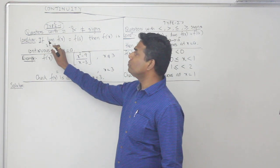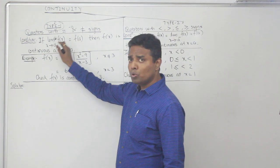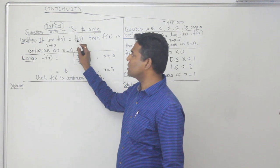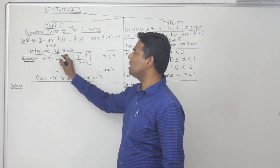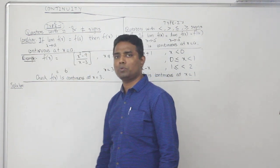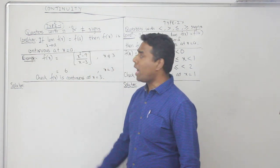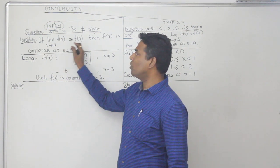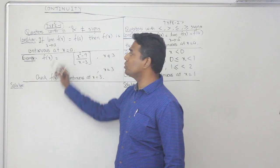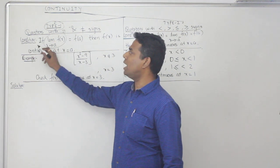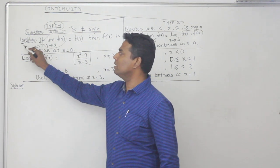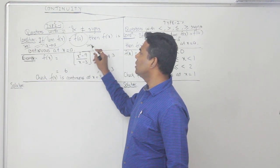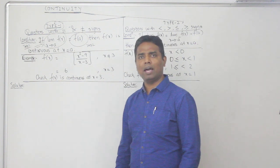The condition for continuity: if you prove that limit x tends to a of f(x) is equal to f(a), then the function is continuous at x = a. So we need to prove two things — Step 1: find the value of the limit, and Step 2: find the value of f(a).